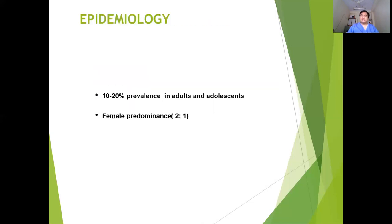The epidemiology of Irritable Bowel Syndrome: around 10 to 20% of the adult population are suffering from Irritable Bowel Syndrome, and it is more prevalent in females.